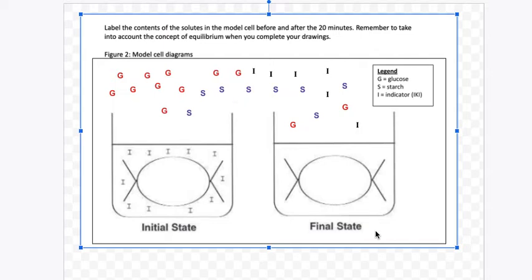This video helps you check your understanding of what was going on in the diffusion lab. Our initial state diagram means when the experimenters finished putting everything in that they were going to put in, but before any time had passed.